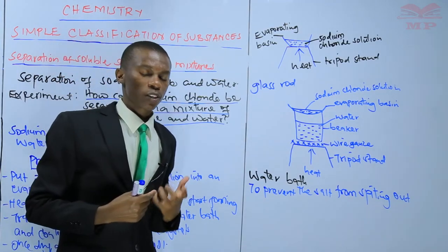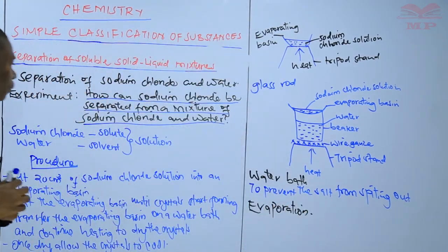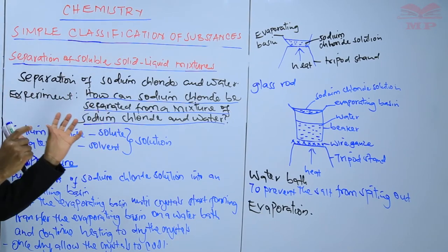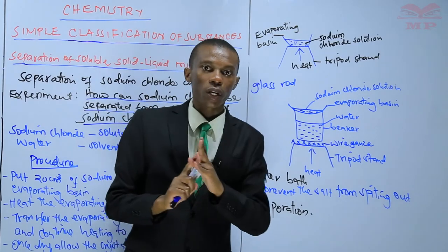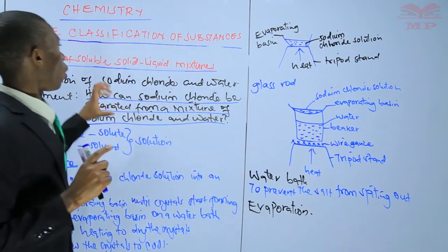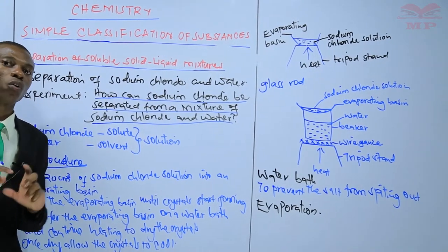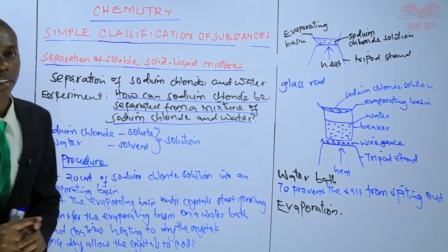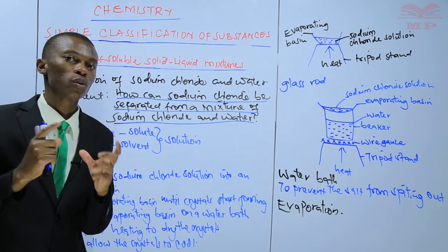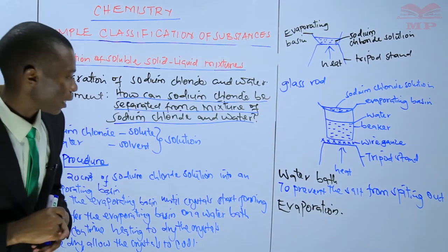This method of separation is called evaporation. It is called evaporation because the solution contains water and sodium chloride — a solvent and a solute. The aim of our experiment was to obtain sodium chloride from the mixture. When you heat that solution, water evaporates and at last you are left with sodium chloride crystals.